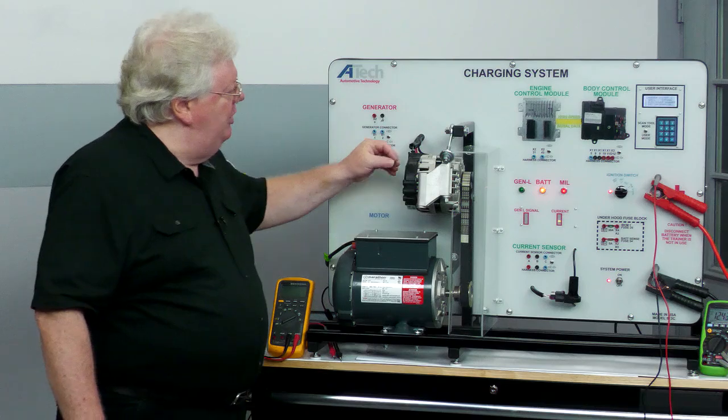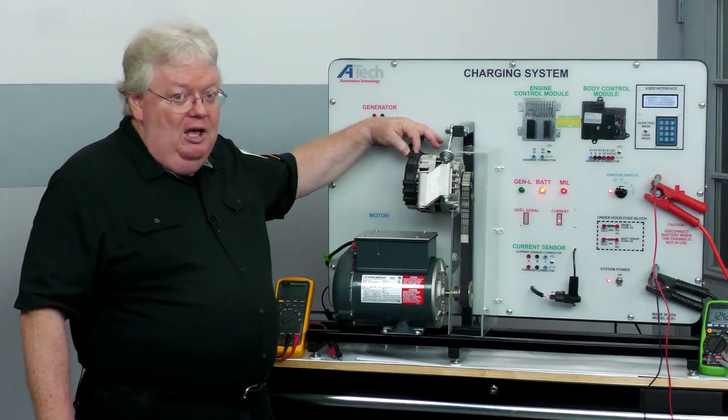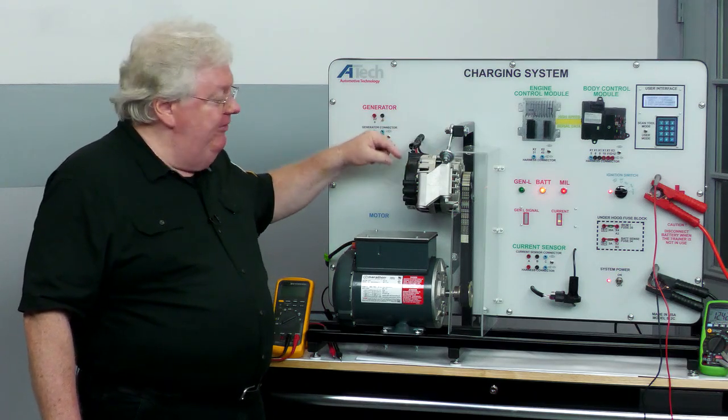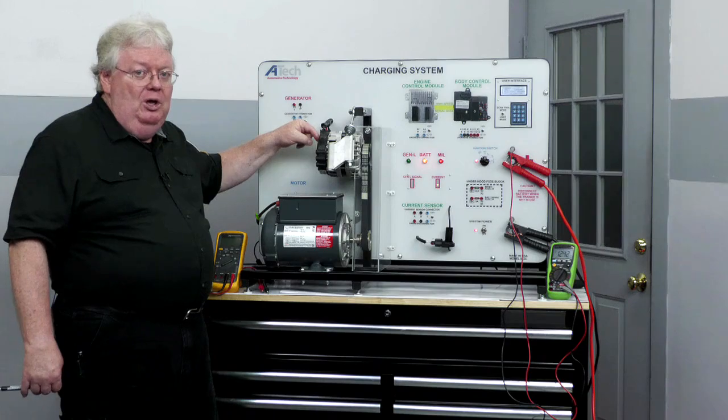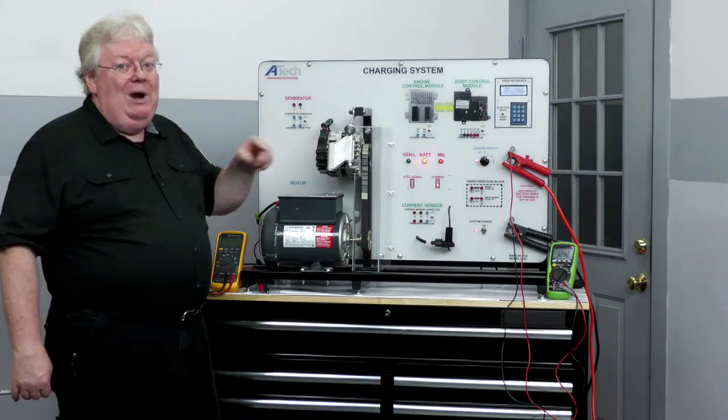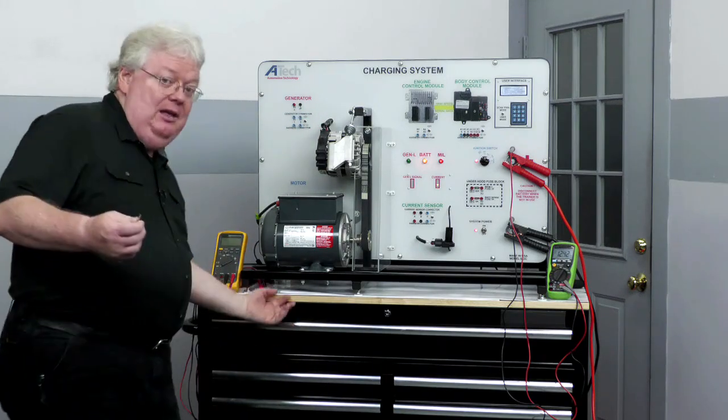Typically, you could have maybe the L terminal, always the L terminal, and maybe the F and the S. Those were for the BCM to look at voltage and so forth. But the L terminal for lamp was mandatory. All you had to do on those alternators is unplug the regulator, and then find which male terminal lined up with the connector for L for lamp. And then, of all things, take a test light.